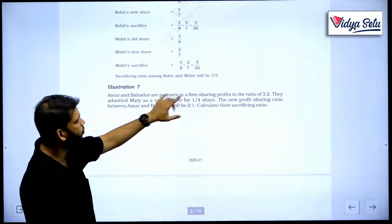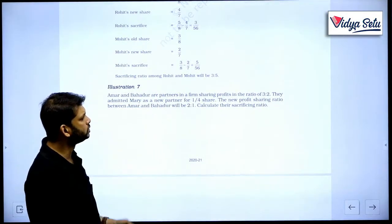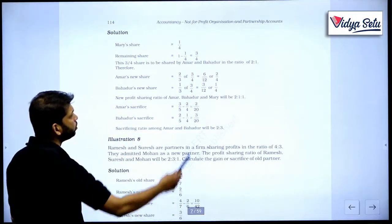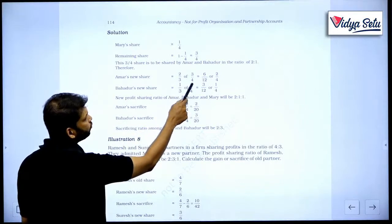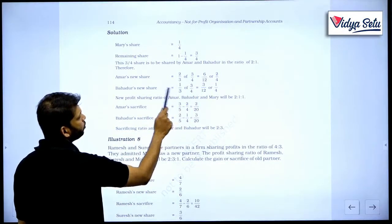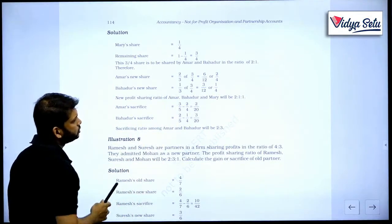So this whatever is remaining is to be divided in 2 is to 1. Why? Because it was written here, the new profit sharing ratio will be 2 is to 1 amongst these two only. So 3 upon 4 multiplied by 2 upon 3, we get this. 3 upon 4 multiplied by 1 upon 3, we get this.